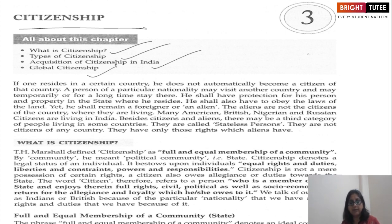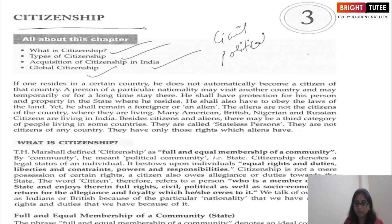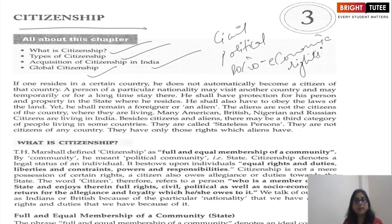Besides granting rights, the state expects certain duties from those who live in it and make use of these rights. The rights include civil, political, and socio-economic rights. The person who has all these types of rights is called the citizen of the country. Harold J. Laski stated that citizenship members are bound to society by certain duties, subject to its authority, and are equal participants.